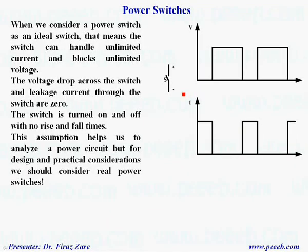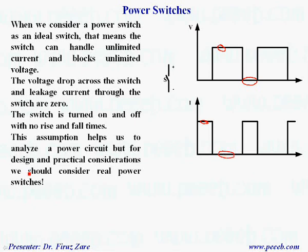There are two other switches — GTO and MCT — with special applications in high voltage, high power, especially in power systems, suitable for renewable energy applications, reactive power control, and active power filters. When we consider a power switch as an ideal switch, it can handle unlimited current and block unlimited voltage, the voltage drop across the switch when on is almost zero, the leakage current when off is almost zero, and the switch turns on and off with no rise and fall times. This assumption helps us analyze the power circuit, but for design and practical considerations we should consider real power switches.